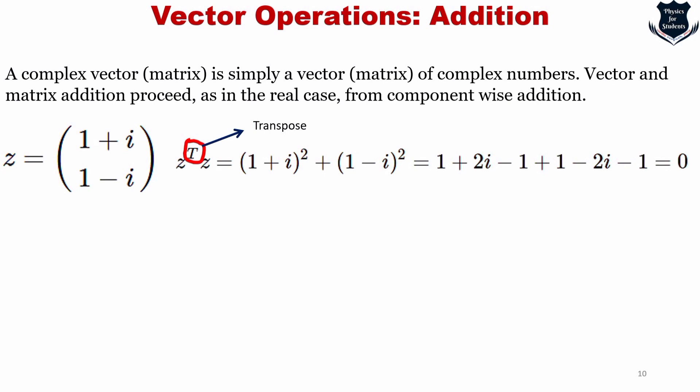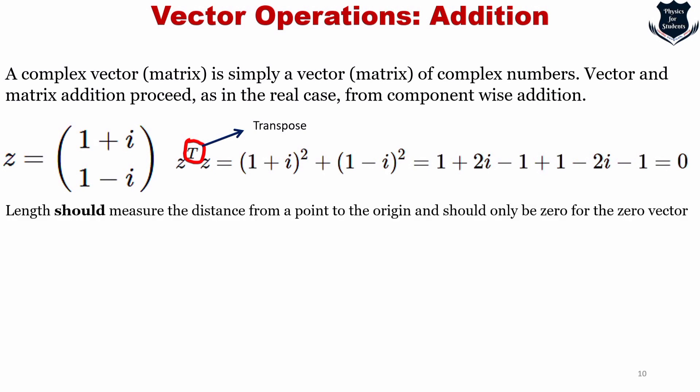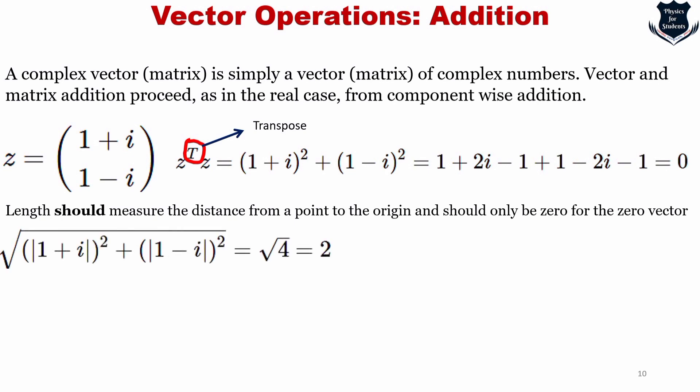Remember that length should measure the distance from a point to the origin and should only be zero for the zero vector. For complex vectors, we take the sum of the squares of the magnitudes of the components. In the above example z = (1+i, 1-i), taking the modulus of each component — |1+i| and |1-i| — and summing produces a length of 2. This new definition uses the complex conjugate.